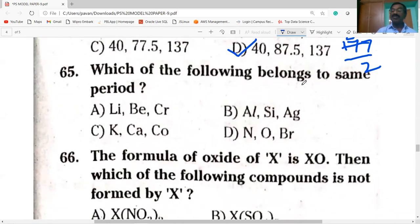Which of the following belongs to same period. So potassium, calcium and cobalt, they belong to fourth period.